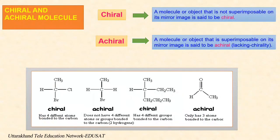Chiral and achiral molecules: chiral molecules are non-superimposable on their mirror image. Chiral molecules do not have a plane of symmetry or center of symmetry. A molecule is achiral if it is superimposable on its mirror image; most achiral molecules do have a plane of symmetry or center of symmetry. As examples shown in this picture: the first molecule is chiral because it has four different atoms bonded to the carbon; the second is achiral because it does not have four different atoms or groups bonded to the carbon — two atoms are the same; the third is chiral with four different groups bonded to the carbon; and the fourth is achiral with only three atoms bonded to the carbon.